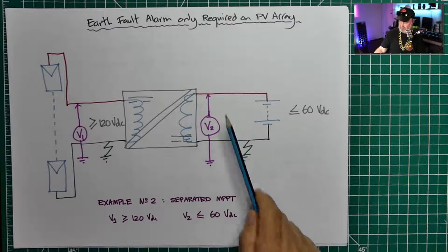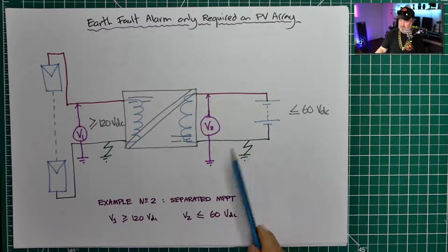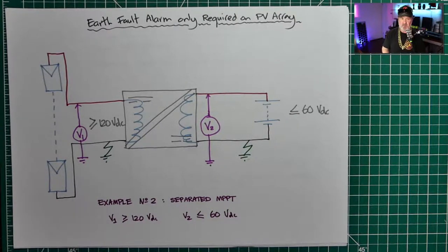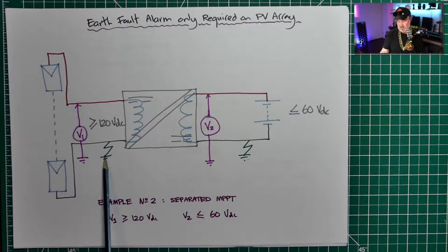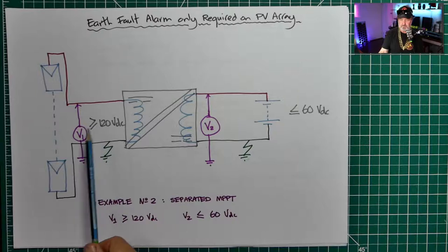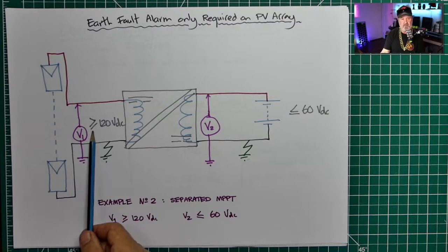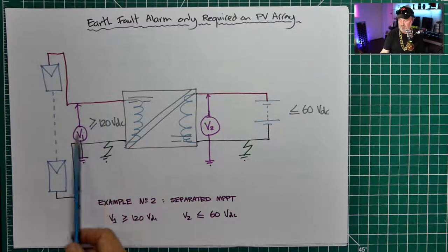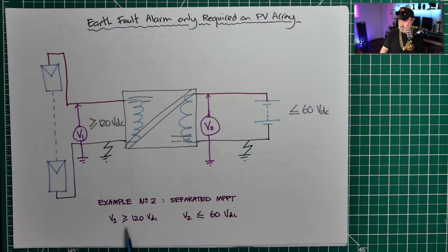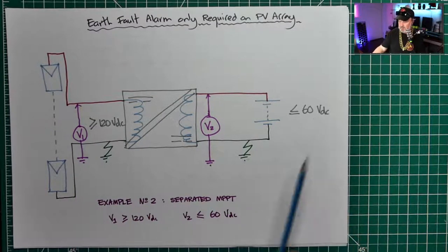We'd only see the maximum voltage of the battery. But on the PV array side, we still have an LV PV array. An earth fault on that side, if it's over 120 volts, we're required to have earth fault detection on the PV array side. So we've got to detect that earth fault at V1 — which could be up to 120 volts or above — whereas V2 is going to be at the battery voltage.